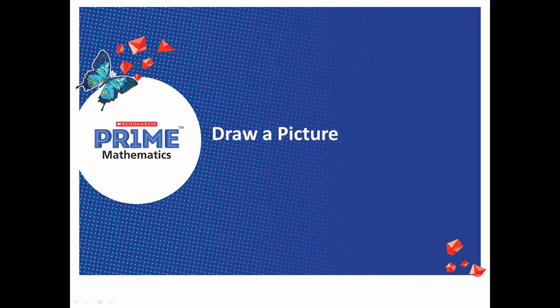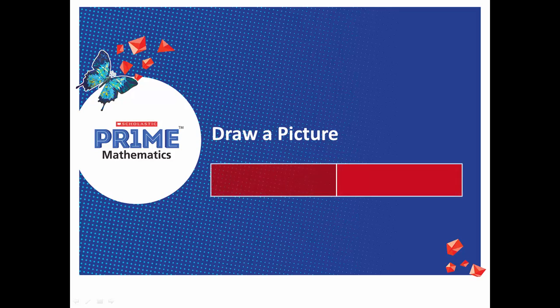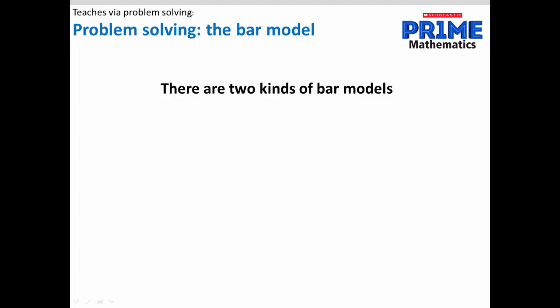Draw a picture may be used as a heuristic or strategy to represent mathematical situations. Unique to Singapore mathematics is the use of the bar model to represent number relationships. The bar model takes the strategy of draw a picture further to represent the relationship between numbers. There are two ways to represent a bar model: side by side, to represent a part-whole relationship.